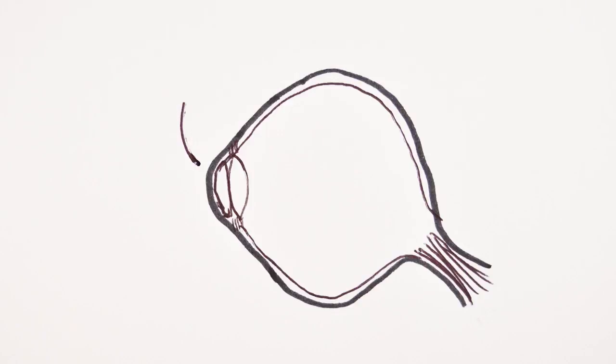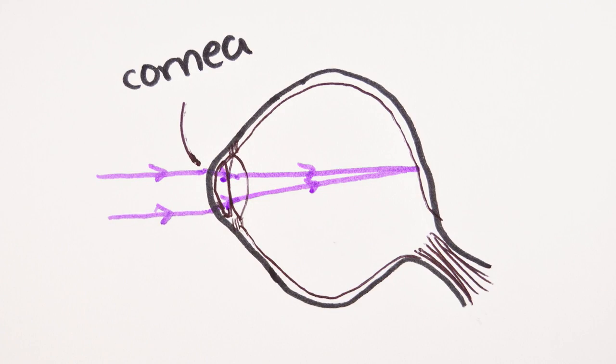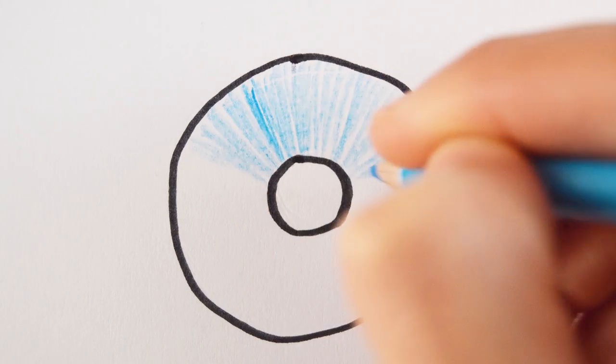At the front is the cornea. This reflects light by a fixed amount to help us focus the light onto the retina. The pupil is simply the hole where the light enters the eye and the size of this hole is controlled by the iris.